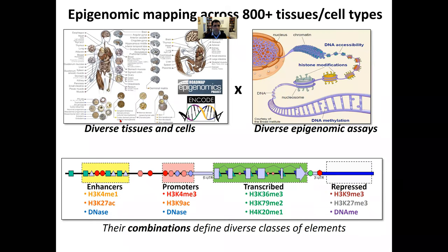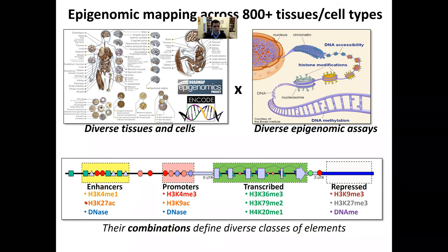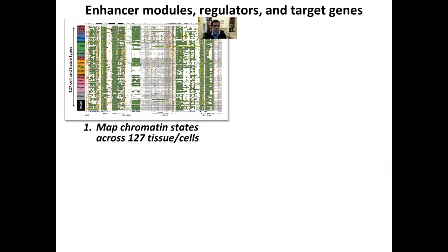To systematically understand this, ENCODE, Roadmap of Genomics, and many other consortia have sought to systematically profile diverse tissues and cells across multiple stages of development in many different regions of the brain, and carry out epigenomic assays including DNA accessibility, DNA methylation, and histone modifications, to recognize the combinations of these epigenomic marks that define distinct states of chromatin. These include enhancer chromatin states in orange, promoters in red, transcribed in green, and repressed in gray. We can now systematically map these states in every one of hundreds of epigenomes to systematically understand the dynamics of chromatin.